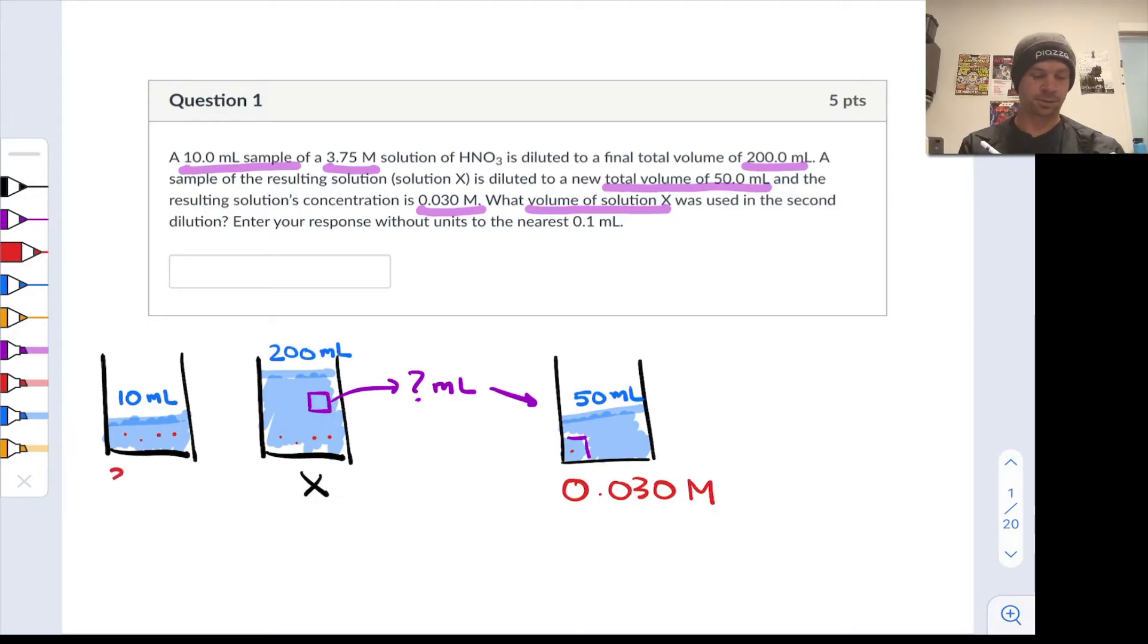So we started here at 3.75 molar. We actually don't know the molarity of solution X, that's going to be useful for us to figure out. Our final solution volume here is 50 milliliters and final concentration is 0.030 molar. All right so how do we proceed here?